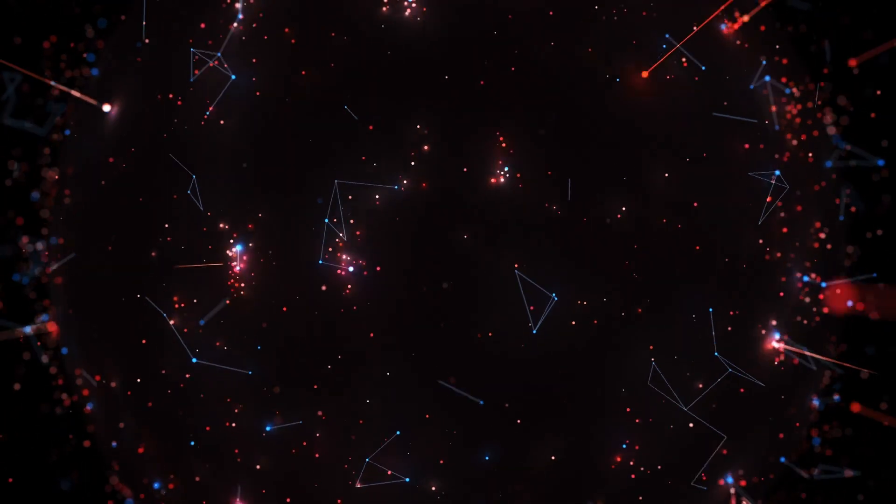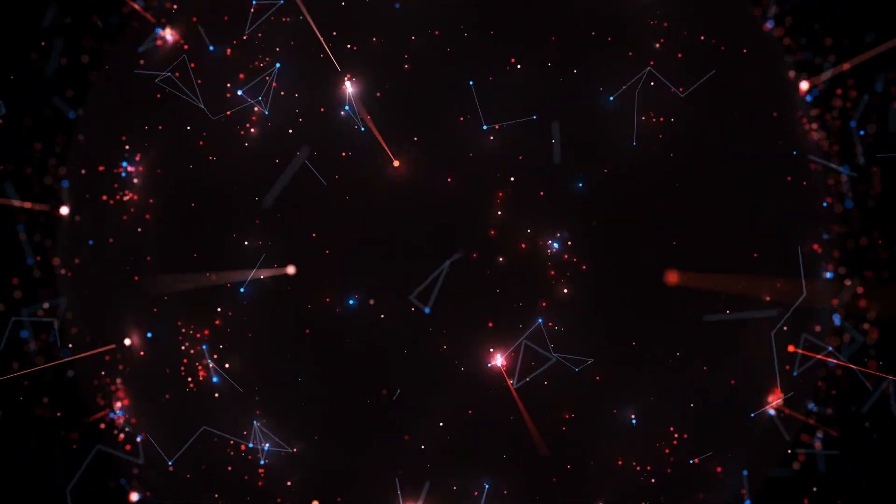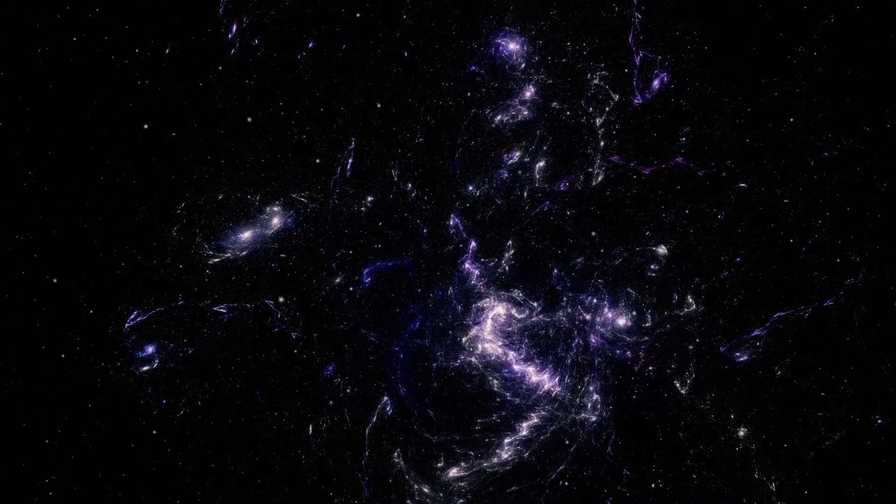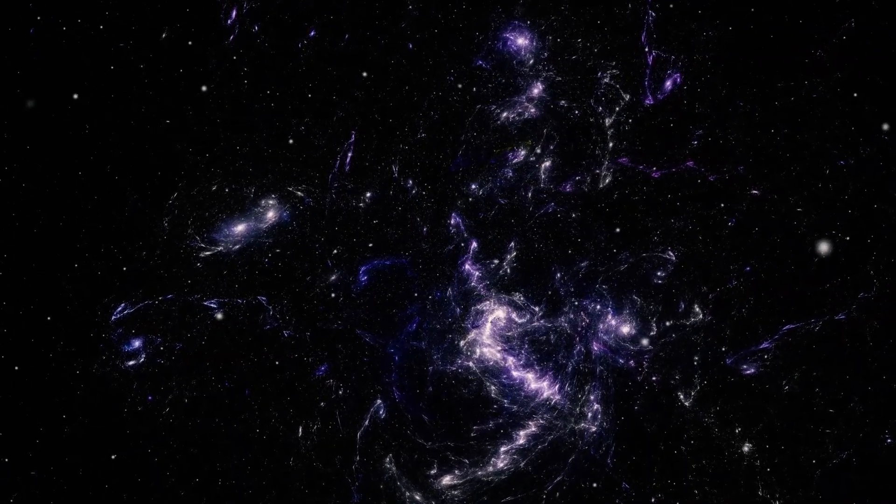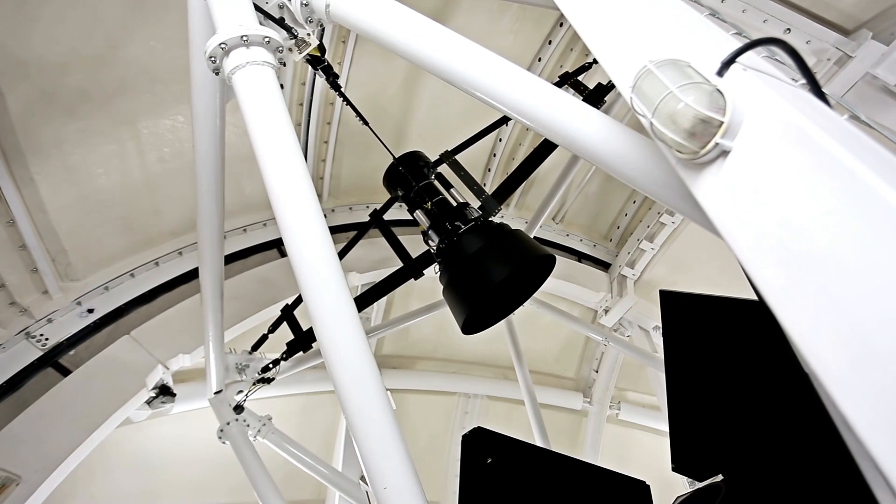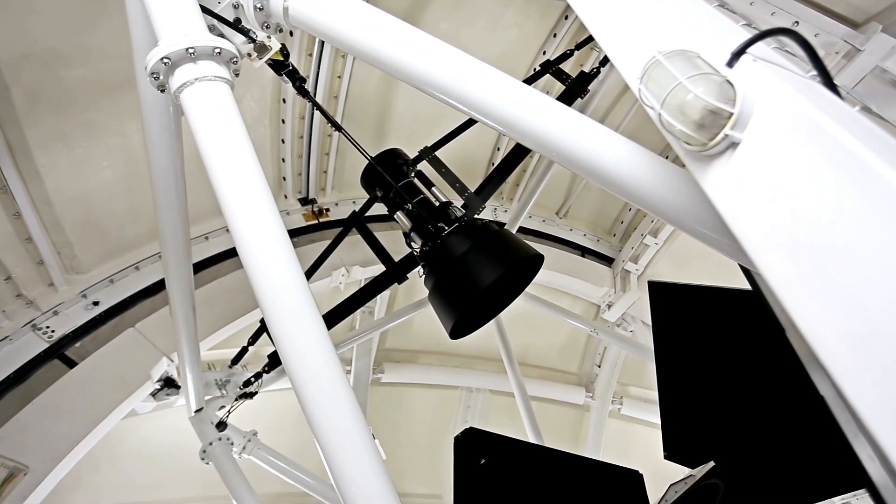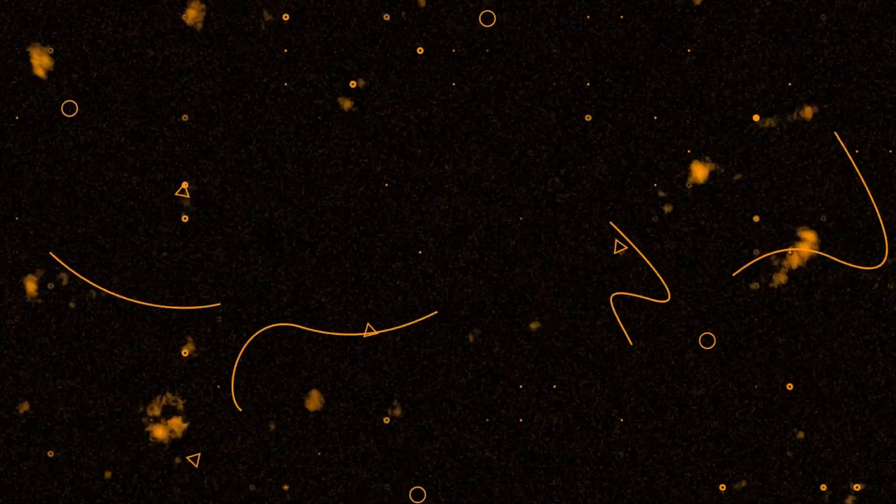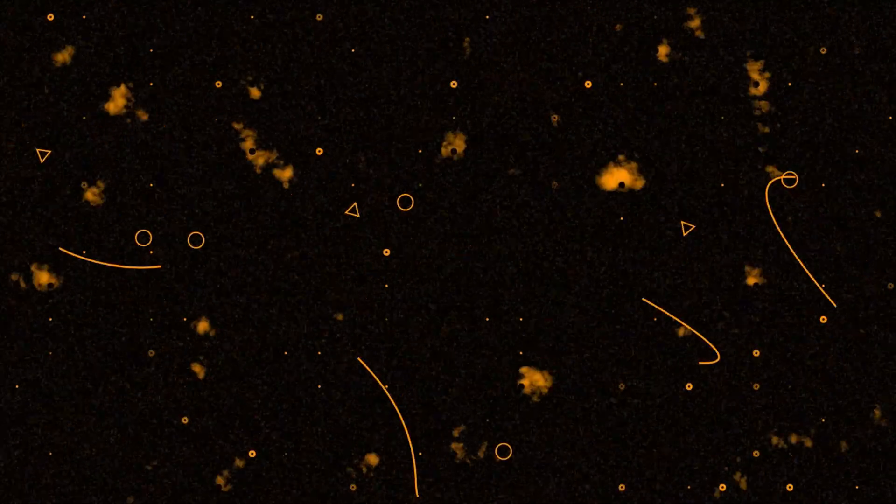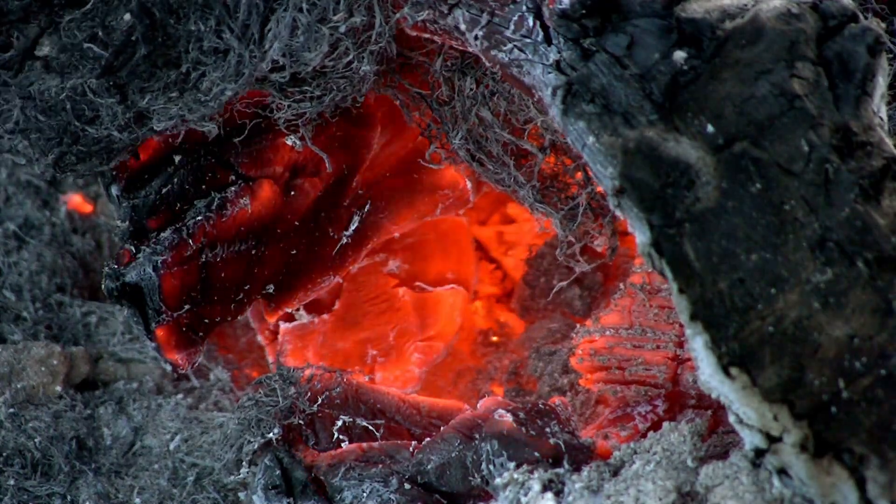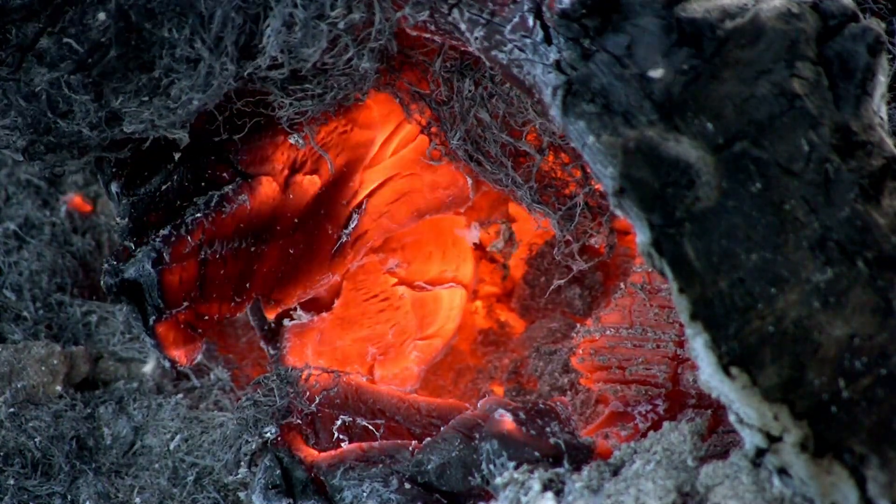The Selim supercluster, discovered in the 1980s, spans some 910 million light-years. To put it in perspective, the supercluster of Laniakea, which includes the Great Attractor, is about 520 million light-years across and has an enormous mass. However, the Selim supercluster is even larger, being approximately 1.7 times more gigantic than the Laniakea supercluster.